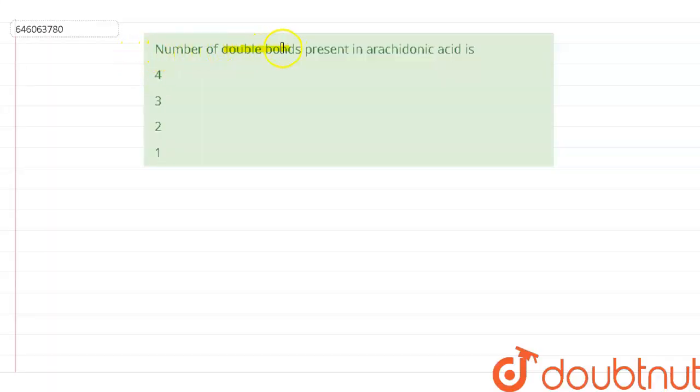Number of double bonds which is present in arachidonic acid is? And the options are: first is four, second is three, third is two, and fourth is one. If you talk about this arachidonic acid, what is it?